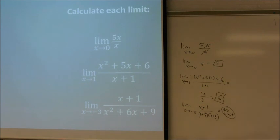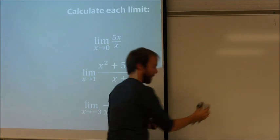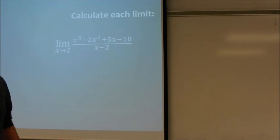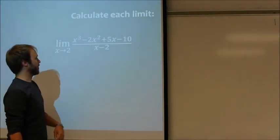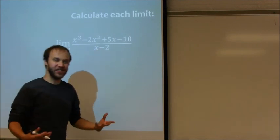Moving on to the next seven examples. More limit problems. Here I have the limit as x approaches 2, and that's cubed minus 2x squared plus 5x minus 10. You notice if you substitute a 2 into the denominator, you get 0.